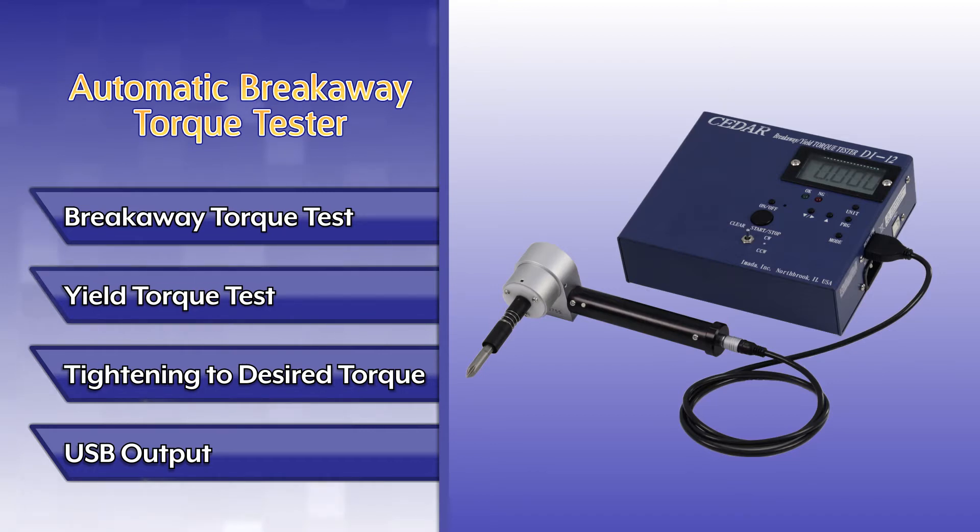The DI-12 can also be used to determine the yield torque of a screw or bolt joint. Determining the yield point of a fastener joint is crucial in determining a target tightening torque. The DI-12 is also able to tighten fasteners to a desired torque value set in the instrument. The DI-12 also features USB output of peak or continuous data.